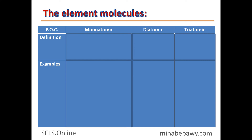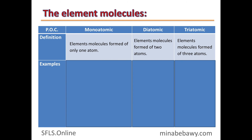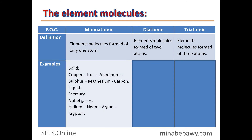Let's compare between the three types of element molecules: monoatomic, diatomic, and triatomic. Monoatomic: element molecules formed of only one atom. Diatomic: element molecules formed of two atoms. Triatomic: element molecules formed of three atoms. Examples for monoatomic elements — solids such as copper, iron, aluminum, sulfur, magnesium, and carbon; liquid: mercury. Mercury is considered the only monoatomic liquid element. All noble gases are monoatomic, such as helium, neon, argon, krypton, xenon, and radon.